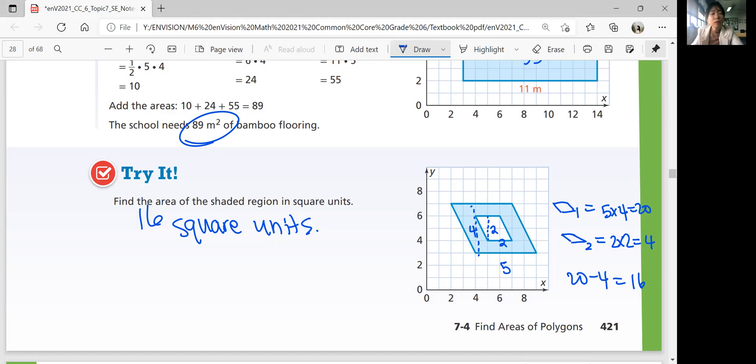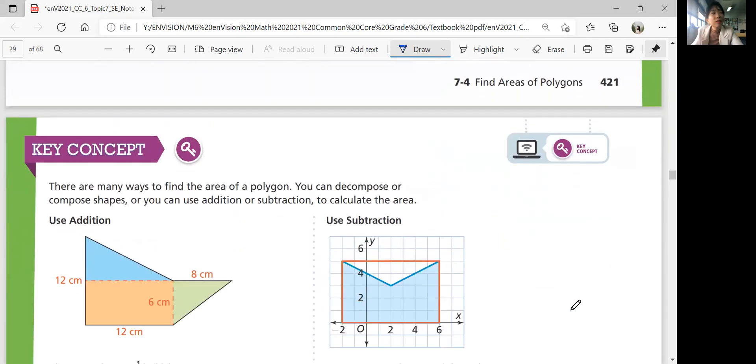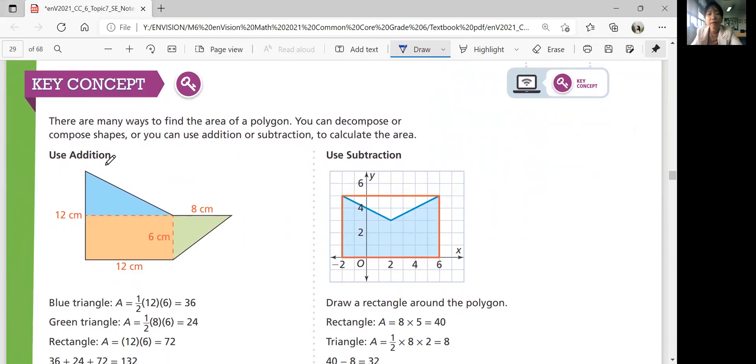That was it for this lesson. So let's summarize our lesson. There are many ways to find an area of a polygon. You can decompose or compose shapes or you can use addition or subtraction to calculate the area. Using addition, you can decompose and then figure out the area separately and then add them. And then subtraction, you figure out the area of the whole rectangle and then subtract this part that's not shaded.